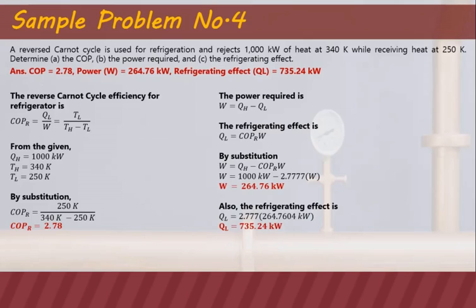In summary: the COP is 2.78, indicating efficiency; the power required from electricity is 264.76 kilowatts; and the refrigerating or cooling effect produced in the space is 735.24 kilowatts. These problems review the Carnot cycle efficiency equations and the reverse Carnot cycle efficiency, which are foundational to our discussions on refrigeration systems. See you next meeting — if you have questions, chat me in our Moodle chat.